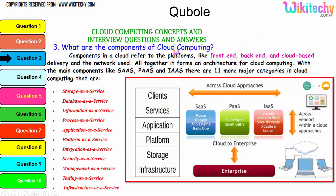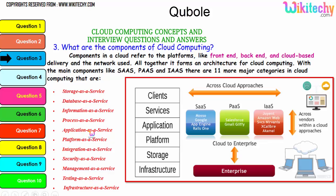The components of a cloud refer to platforms like front-end, back-end, cloud-based delivery, and the network used. Together they form the cloud computing architecture, with the main components being Software as a Service, Platform as a Service, and Infrastructure as a Service. There are 11 major categories in cloud: storage as a service, database as a service, information as a service, process as a service, application platform, integration, security, management, testing, and infrastructure.